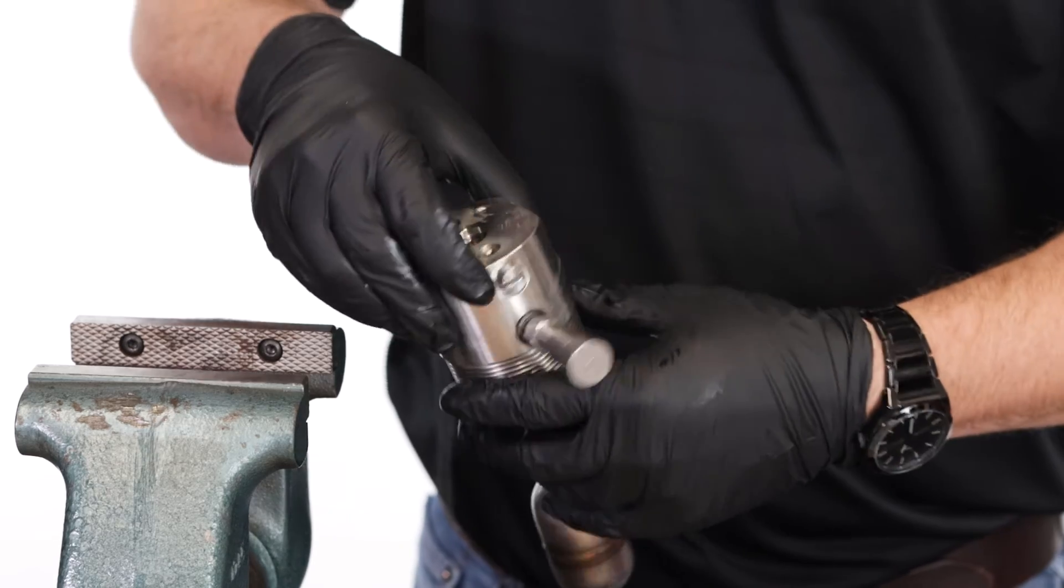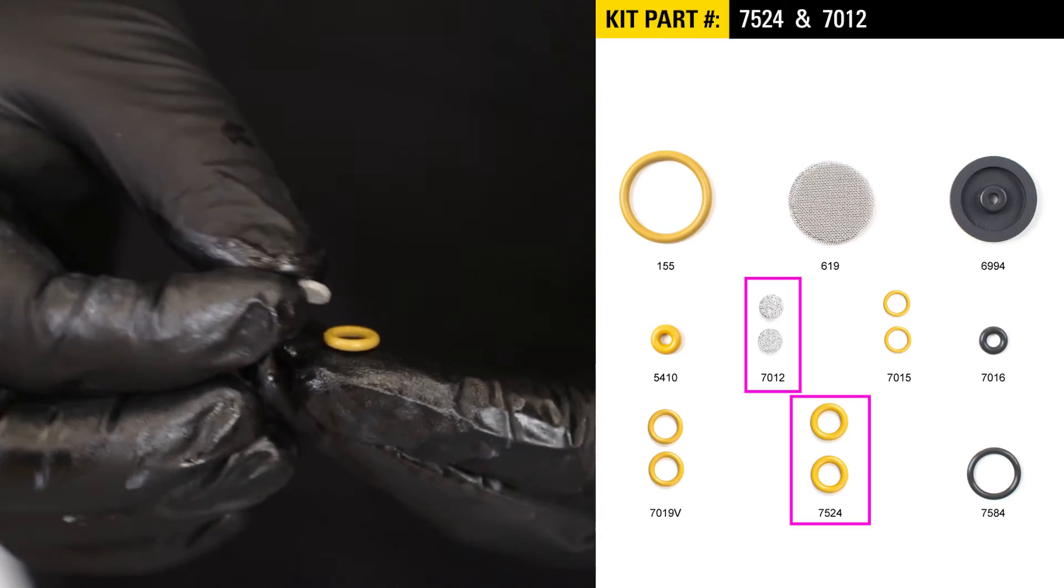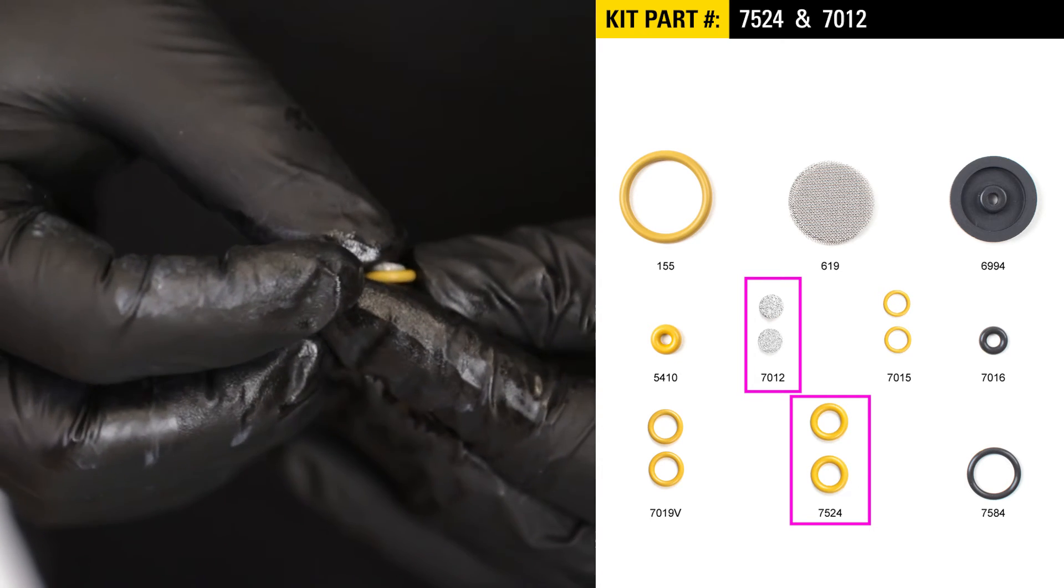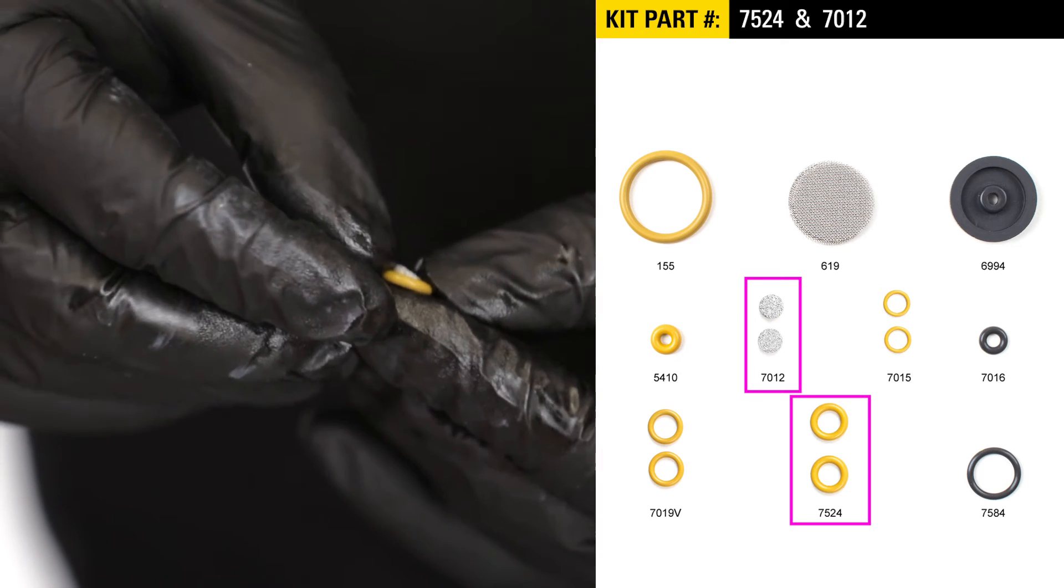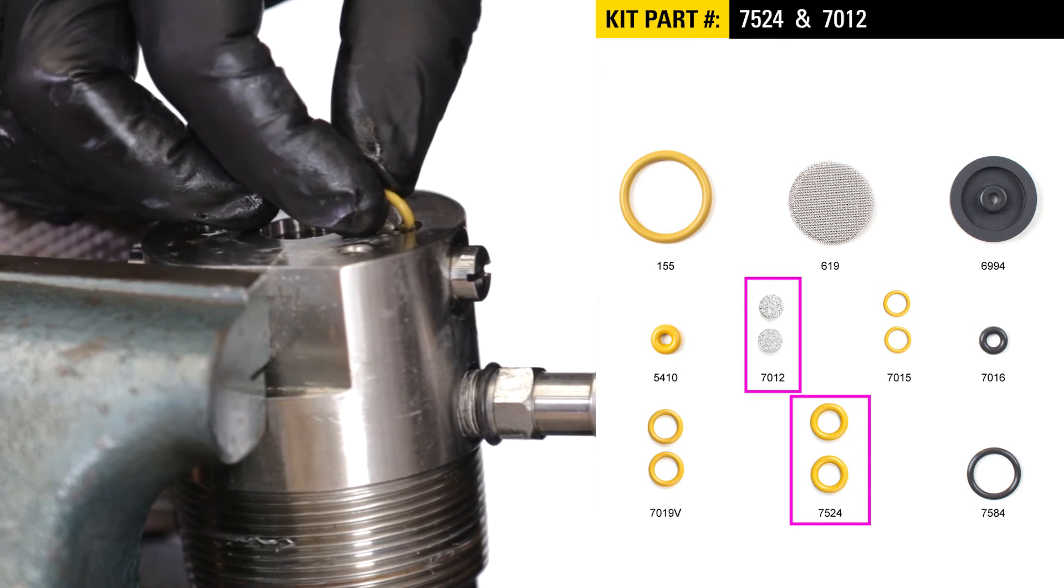Reposition the housing again to now have access to the back of the housing. Install the 7524 O-rings over the 7012 disk filters. Then place them into the housing.